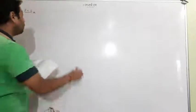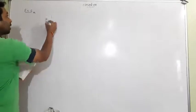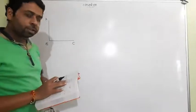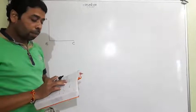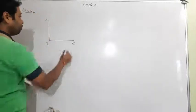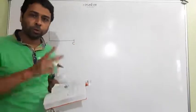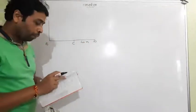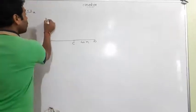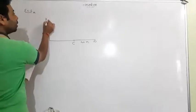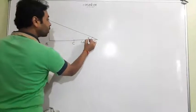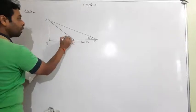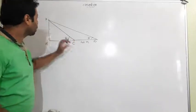Let me first draw the tower. This is tower AB, and this is its initial shadow BC. The shadow is found 40 meters longer — meaning we are comparing two shadows. The first shadow is here, and it becomes 40 meters longer when the Sun's altitude is 30 degrees compared to when it was 60 degrees.